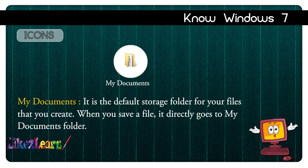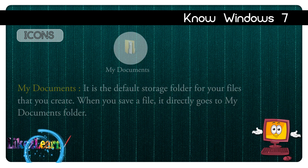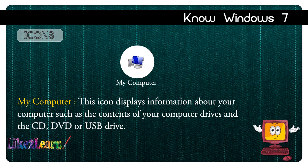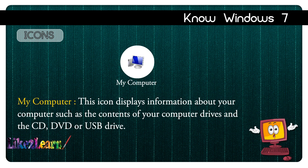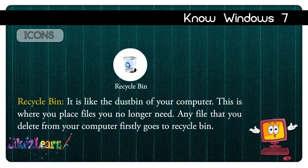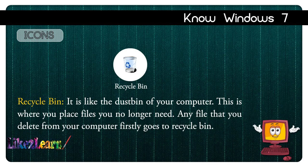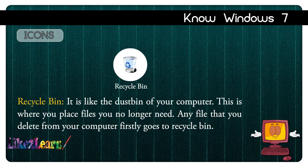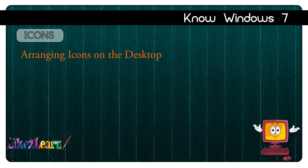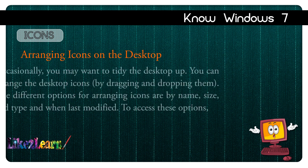My Documents is the default storage folder of your files. When you save a file, it directly goes to the My Documents folder. My Computer displays information about your computer, such as the contents of your computer drives and the CD, DVD, or USB drive. Recycle Bin is like the dustbin of your computer — this is where you place files you no longer need. Any file that you delete from your computer first goes to the Recycle Bin.